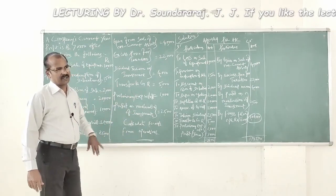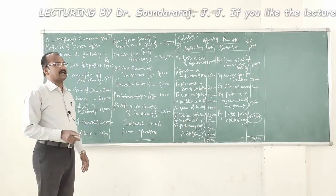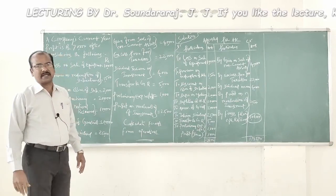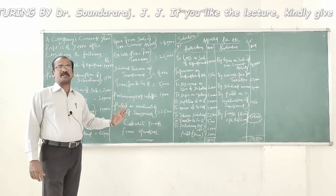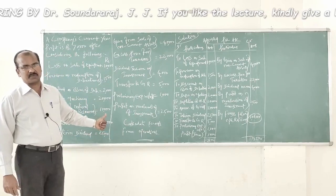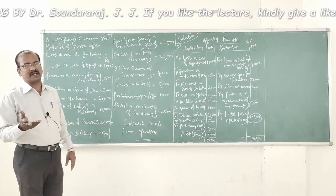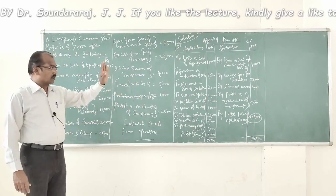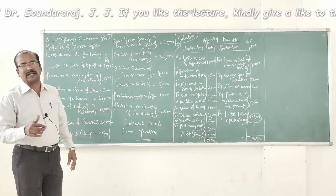If you look into the nature of all the information provided, they are either non-operating, non-fund, or both non-operating and non-fund items — whether related to expenses or incomes. There is also depreciation, which though it is an operating activity, it is a non-cash item. Our job is to categorize the expenses and losses on one side and the incomes on the other side, and do the necessary adjustments in the form of an adjusted P&L account, through which we can calculate funds from operations.